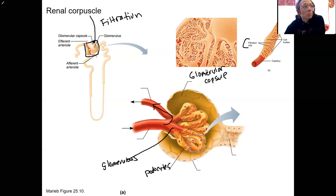There are a couple more structures I want to name on this view. This is the capsular space in between there. This is the proximal convoluted tubule, so filtrate is going to enter that first.